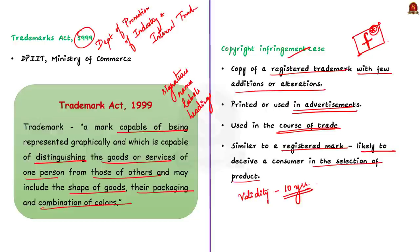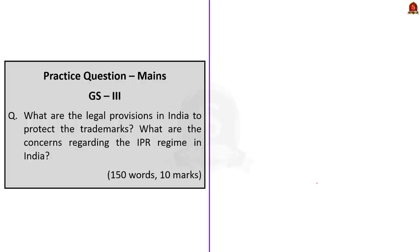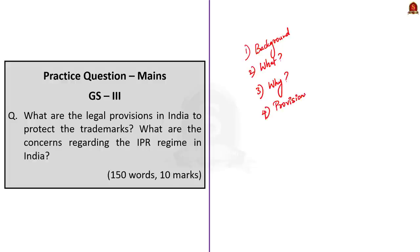The validity period of a trademark in India is 10 years as per Section 25 of the Trademarks Act 1999. In this discussion, we saw the background of the news article, what is trademark, why brands have trademark, the provisions of trademark in India, and the conditions related to infringement of trademarks. Now let us move on to the next article discussion.